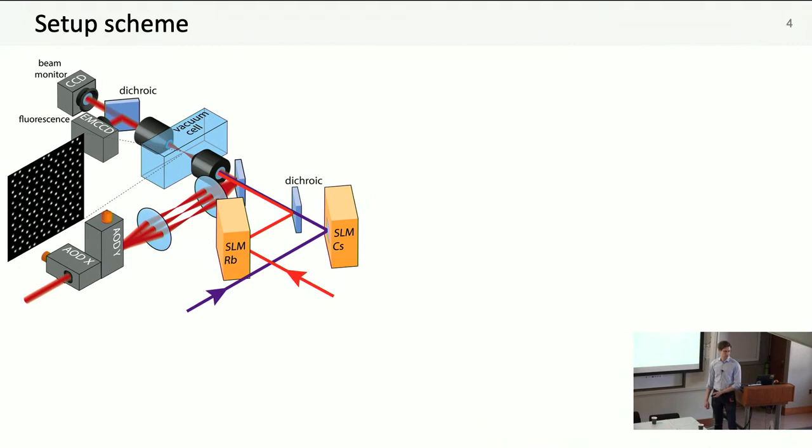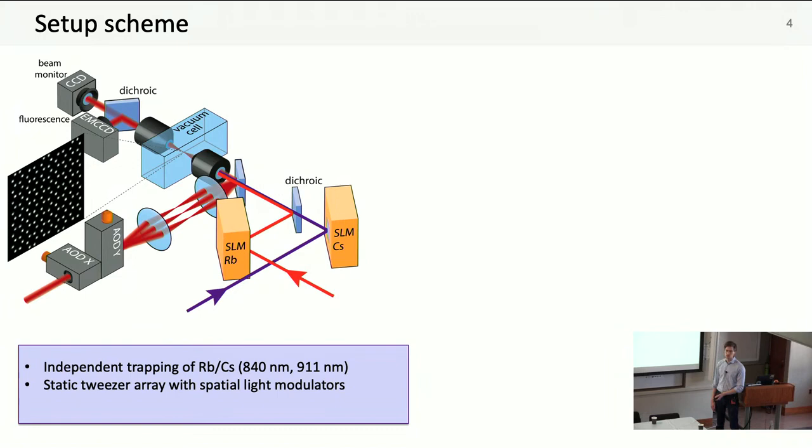Our setup looks like this, quite similar to a lot of other experiments, with a major distinction being that we have two independent SLMs that generate independent traps at 840 nanometers for rubidium and 911 for cesium. These are sufficiently chosen such that the rubidium traps only load rubidium atoms and the cesium traps only load cesium atoms.